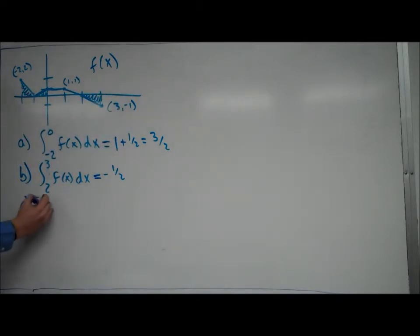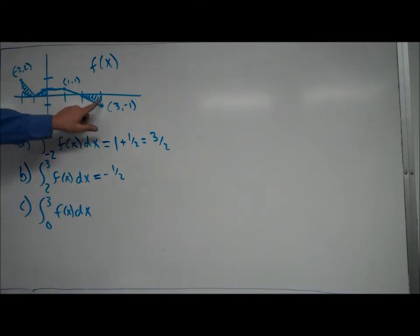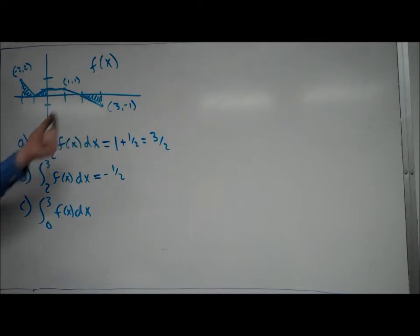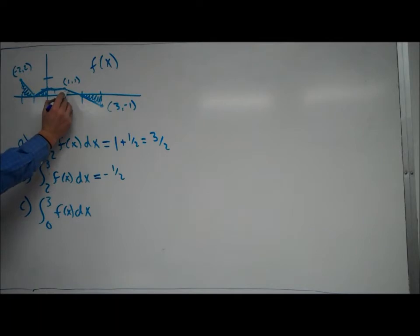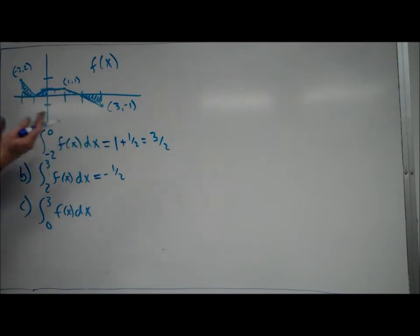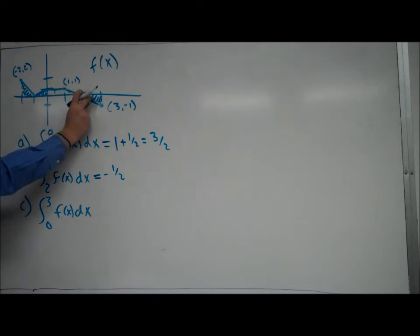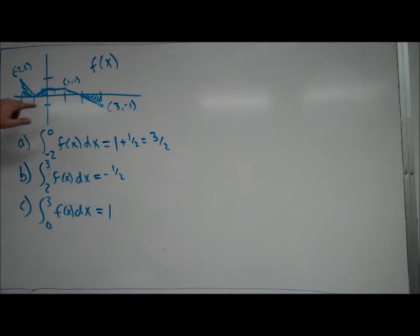If we look at the integral from 0 to 3 of f of x dx, that would be from here all the way to here. We have a portion of that graph above the x-axis and another portion below. The portion above the x-axis we count as positive. We have a rectangle with width of 1 and height of 1, so area of 1. This triangle has an area of 1 half. And this section below would be negative 1 half. The positive and negative areas cancel each other out, so we're left with 1.